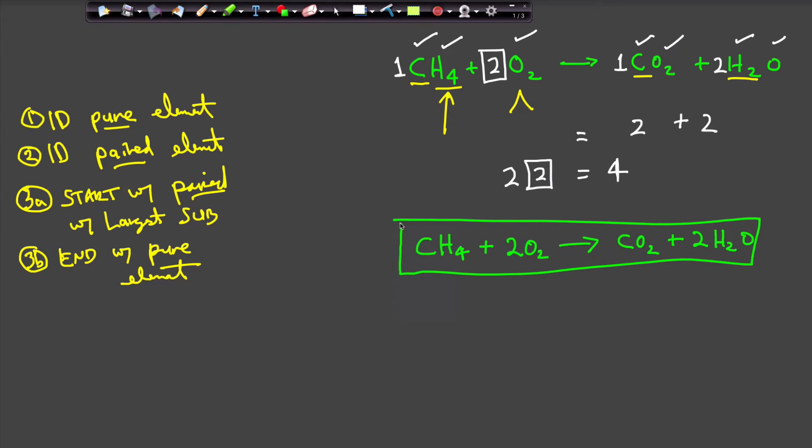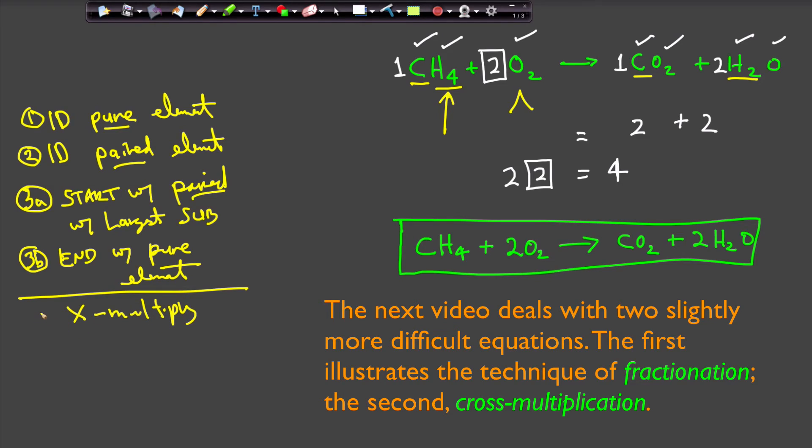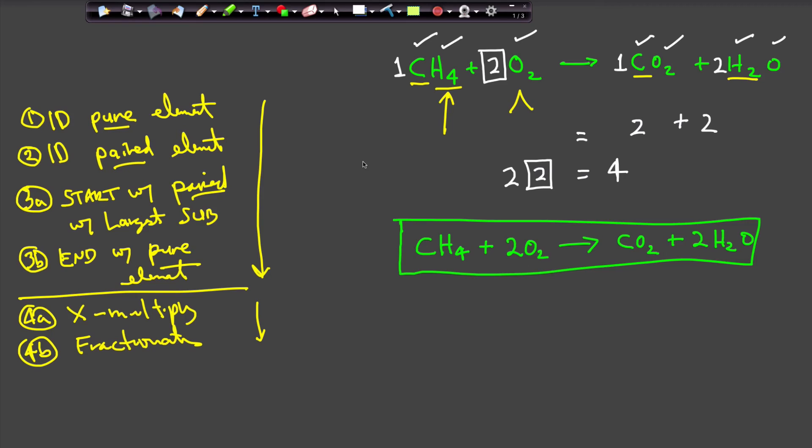Now what we're going to do in the next video is these equations of course get a little more complicated. And so we're going to take up a couple of more difficult examples. And what I'm going to come back and show you is two tricks of the trade you're going to use. One of those is going to be to cross multiply. And the second trick that I might need to use, I'm going to give it the term fractionation. And with that you're going to find that you're going to be able to balance fairly easily literally thousands of chemical equations.